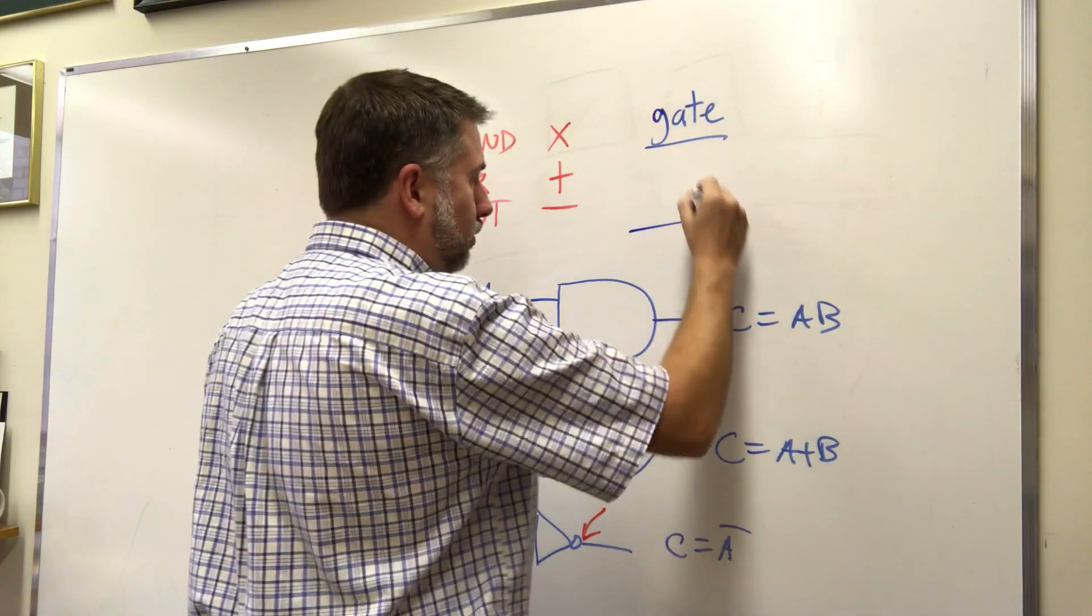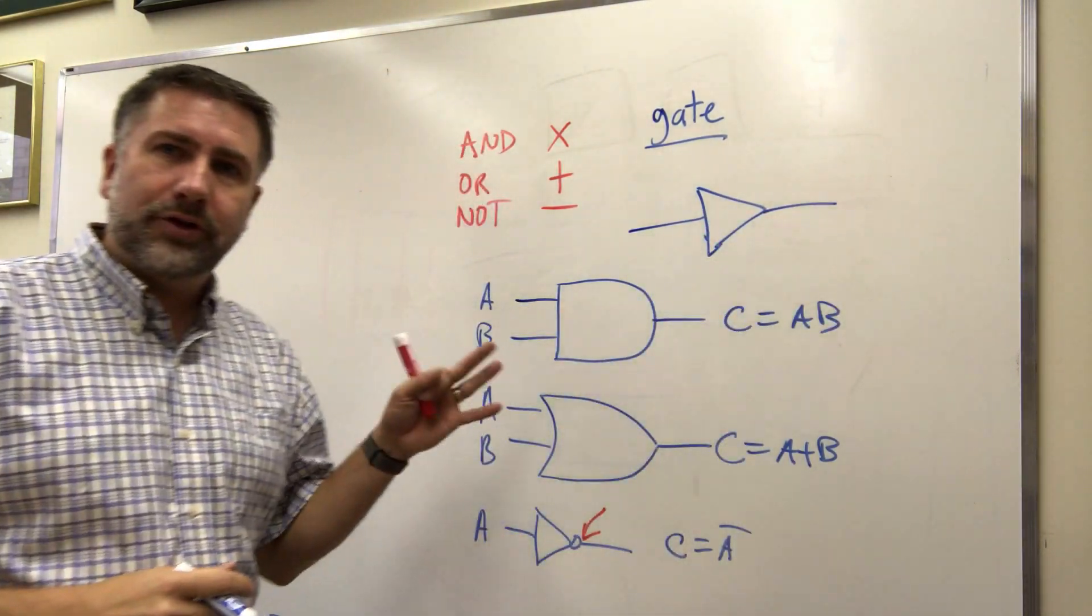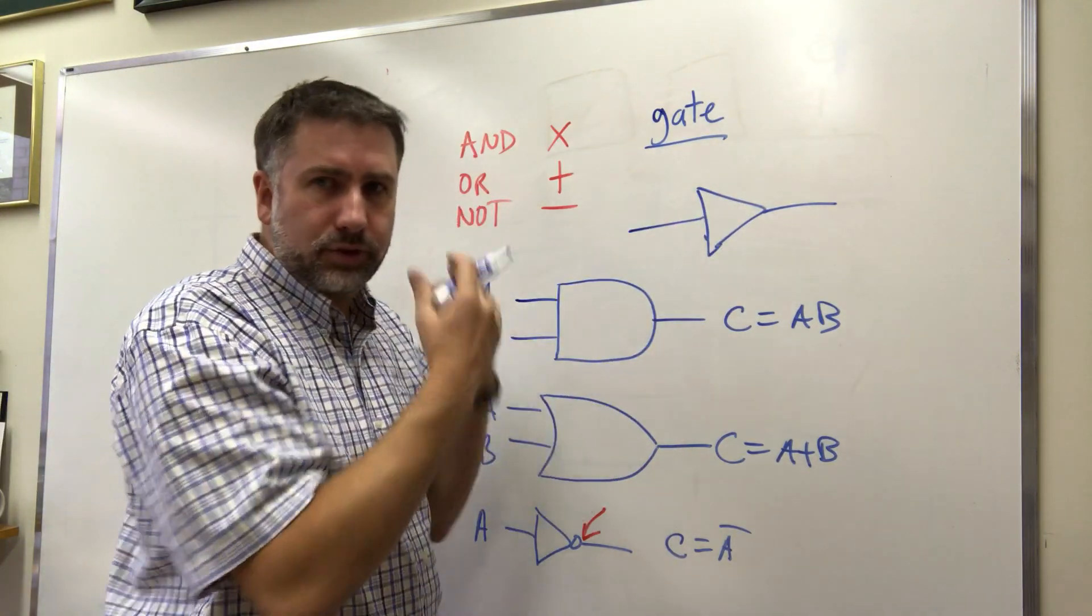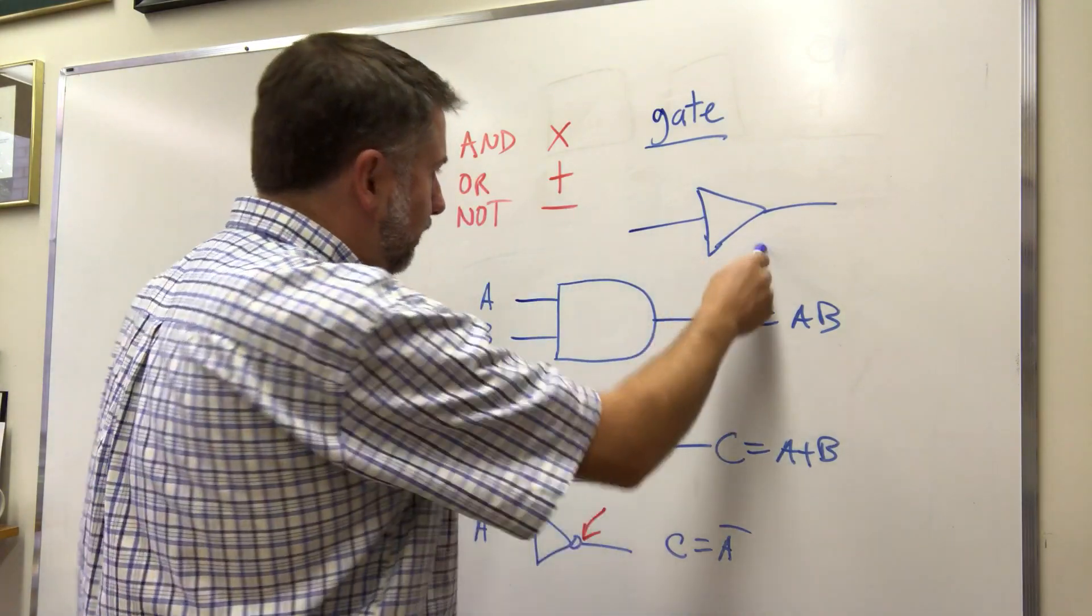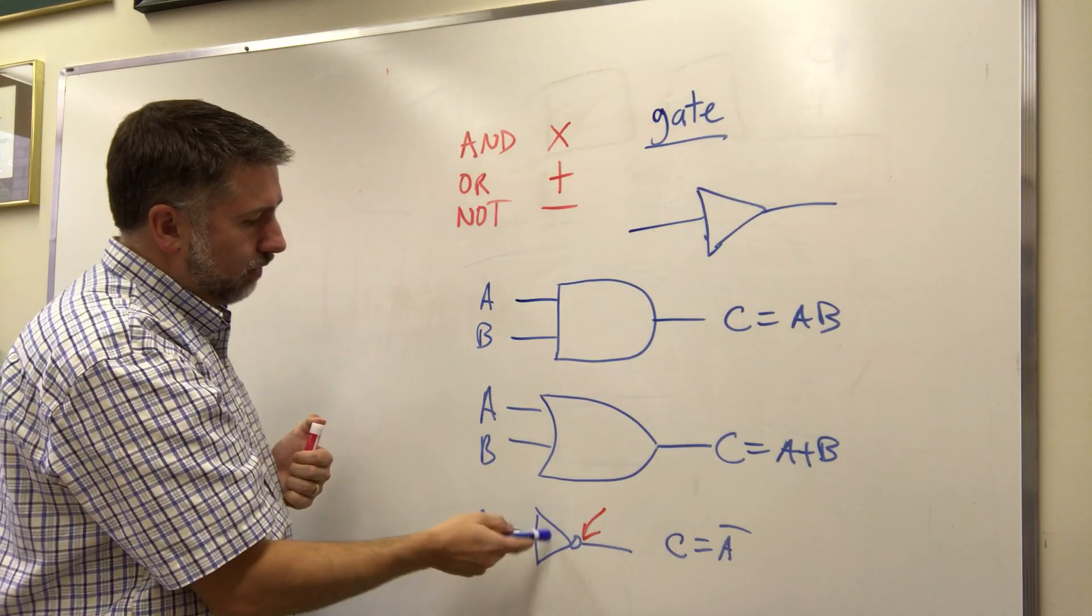There is another device that looks like this without the dot and we call this a buffer. This just means we're not changing the value. It's just going through unmolested unchanged. So that's a buffer and these are our three logical functions AND, OR, and NOT.